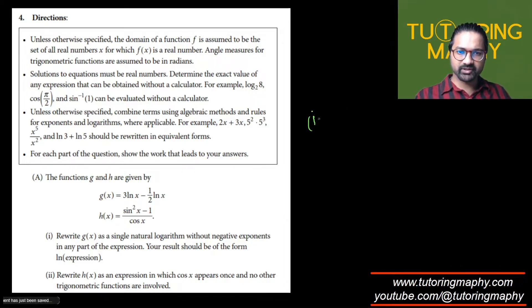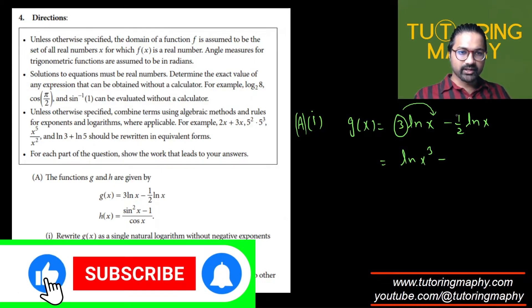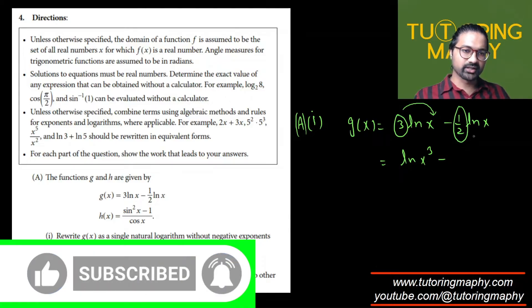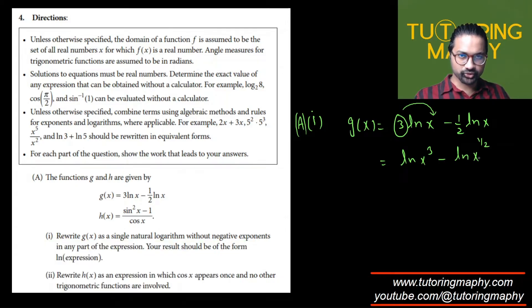The expression is g(x) = 3ln(x) - (1/2)ln(x). The property of the natural log says that if there is a coefficient sitting outside the natural log, then you can move it to the power of the variable. So this can be written as ln(x³). Likewise, this coefficient can be moved to the power of x, so that's ln(x^(1/2)). Then we have a very good property: if you have log a minus log b, that is essentially equal to log(a/b).